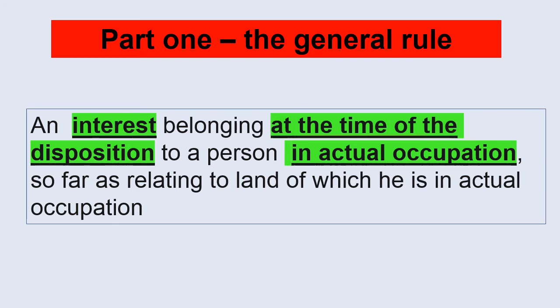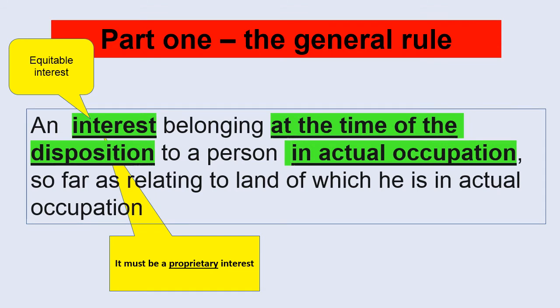There are two requirements. The first is that the third party must have an interest, and in reality you're going to be dealing with an equitable interest here because if you have a third party with a legal interest then you should be dealing with it under a different statutory provision. Also note that the courts have interpreted the word interest to mean a proprietary interest. So the third party must have an interest which is more than simply a personal right in the land. So a personal licence to occupy the land for example would not fall within the general rule and so wouldn't override. The second requirement is that the third party must occupy the land over which they have the interest they're claiming overrides. Now there are lots of cases on how you determine whether a third party is in actual occupation or not, but I'm not going to go through them in any great detail with you here because I want to concentrate on the wording of the statute.